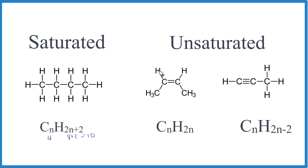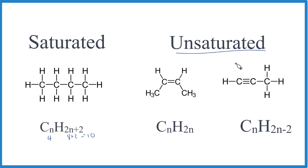Unsaturated is where we have a carbon that's not attached to four things — maybe it's attached to one, two, three things, or maybe like this carbon here, it's only attached to one, two things. So we see that double bond there, or a triple bond. If we have carbons and hydrogens with a double bond or a triple bond, that is an unsaturated hydrocarbon. We can use these general formulas for the alkenes and the alkynes.